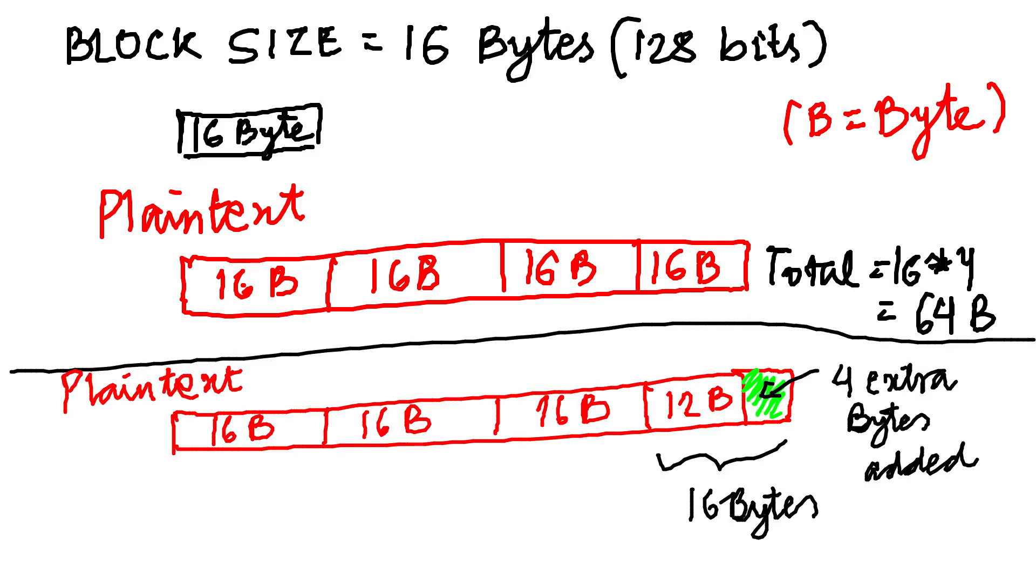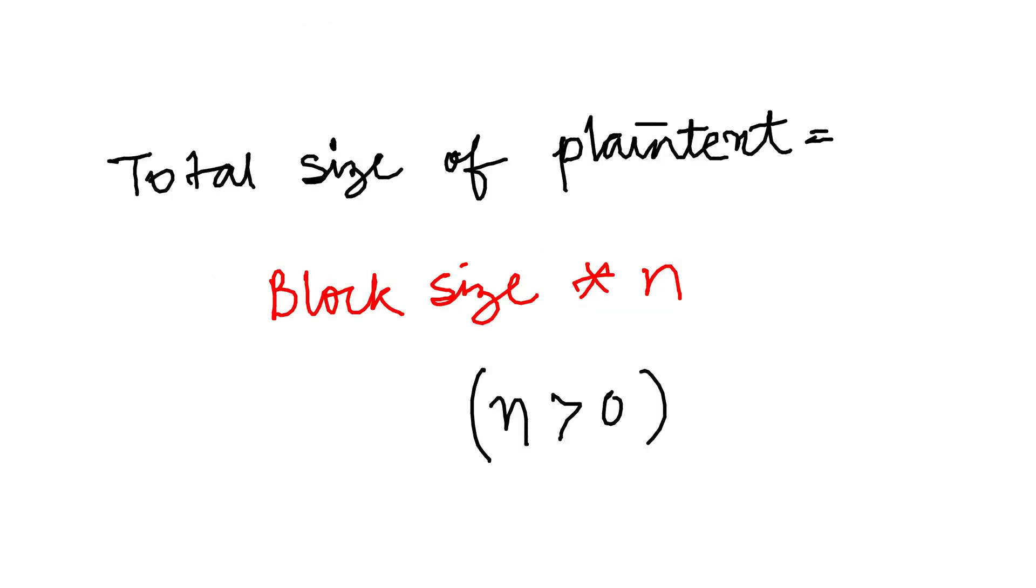But if it is not a multiple of the block size, then redundant or extra bits are appended to the end of the block in order to make its size a multiple of the block size.